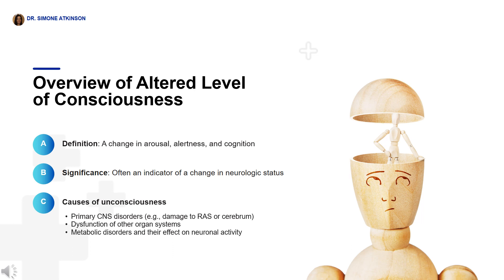When someone's consciousness changes, it's a sign that something might be wrong with their brain or nervous system. It could be because of problems in their brain itself, like changes in the reticular activating system or in the cerebrum, or it might be caused by issues in other parts of the body like the respiratory or cardiovascular systems. Metabolic disorders can affect the brain at the cellular level, causing imbalances of chemicals inside the cells which make the brain's nervous cells not work like they should, and this can cause changes in consciousness, thinking, and feelings.